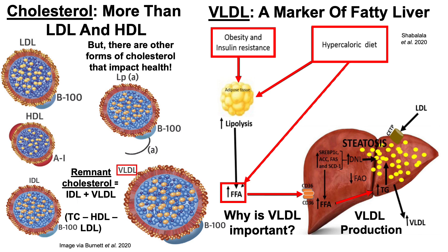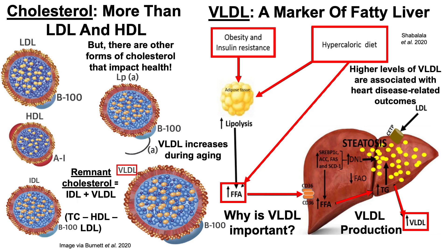With an increase in triglycerides in the liver, this leads to accumulation of lipid droplets in the liver, known as steatosis. Additionally, when there's an increase in lipid droplets in a given tissue — in this case the liver — these lipid droplets are packaged with cholesterol and other membrane proteins into VLDL. So if there are increased circulating levels of VLDL, that can be one measure of a fatty liver.